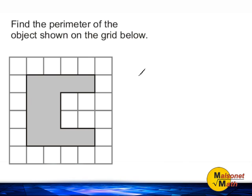Another way to calculate the perimeter of this shape would just be to figure out what the length is of each side and then add all of those sides together.